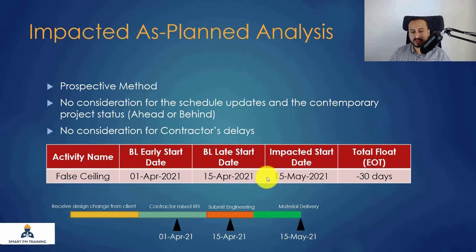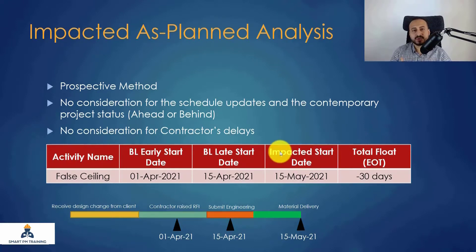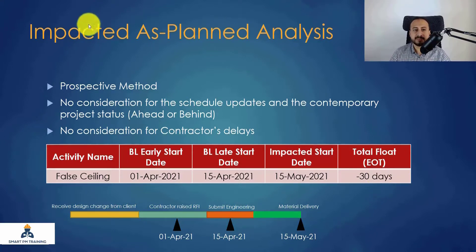Because the client delayed me by one event, I actually started on May 15 — one month behind the late start date. Being 30 days behind the late start date automatically gives a total float of negative 30, because we are using the baseline schedule. The impacted start date is actually the actual start date, but we use 'impacted' in claim vocabulary. So the negative 30 will be the full EOT entitlement.